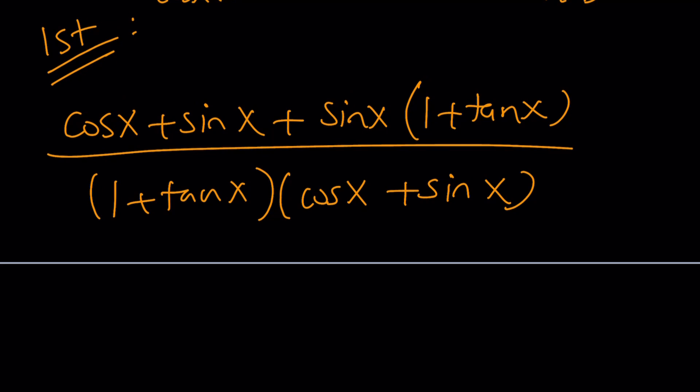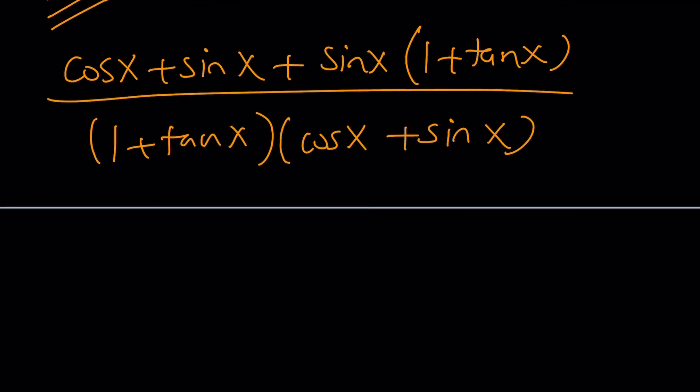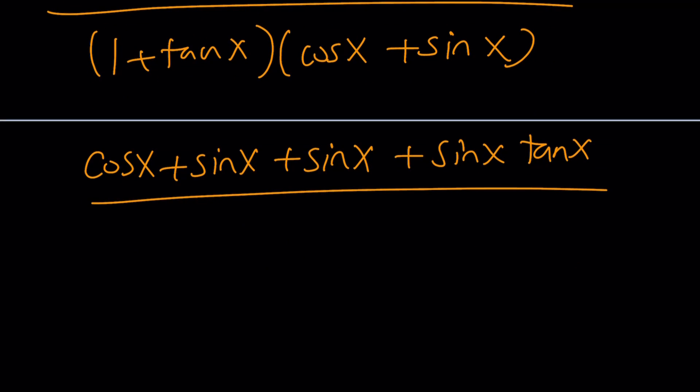Now one thing we can do is distribute everything and then take a look at the expression. We're hoping that this is going to be a nice expression at the end. So let's see. If I multiply these, cosine x plus sine x plus sine x plus sine x tangent x. Don't simplify it yet. I don't want to replace tangent with something like sine over cosine yet. I just want to distribute everything. Cosine x plus sine x plus tangent x cosine x plus tangent x sine x. Awesome. Great.